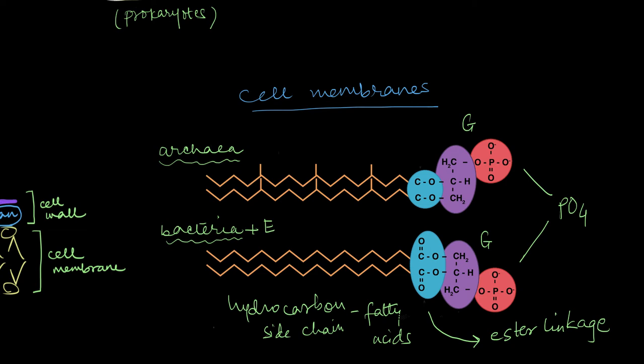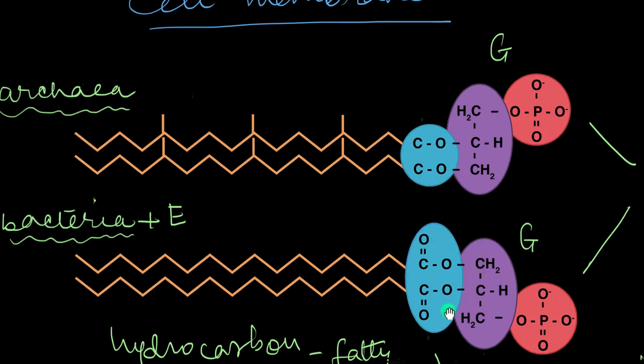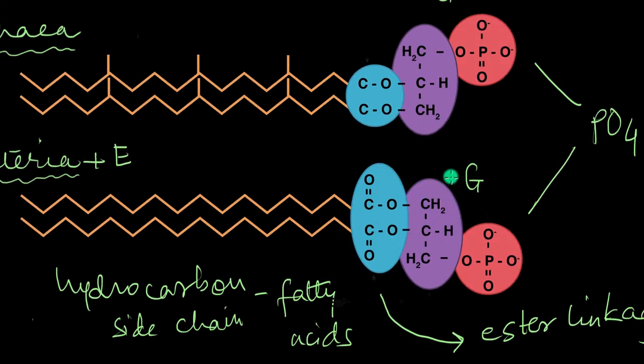In an ester linkage, let's take a closer look at this. You will see that carbon forms a double bond with an oxygen right here, a single bond with a carbon right here, which is the carbon of the side chain. And then it also forms a single bond with an oxygen, which further bonds with the carbon of the glycerol. This is essentially what an ester linkage looks like.